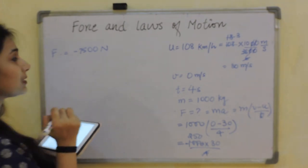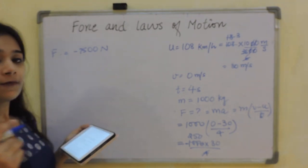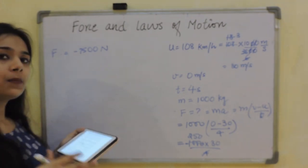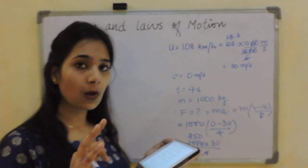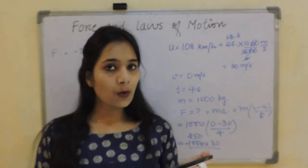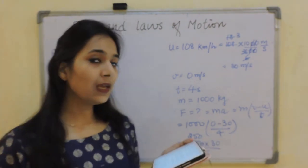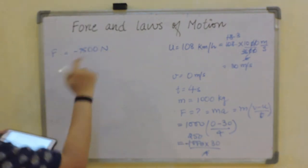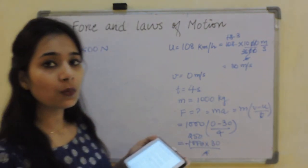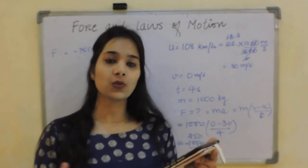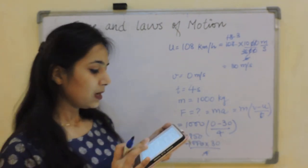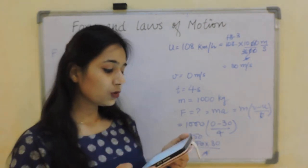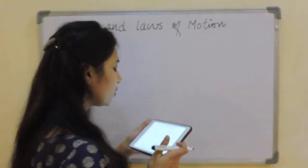The force exerted by the brakes is 7500 Newton. The minus sign is because according to Newton's third law, equal and opposite force acts — you apply force in one direction and the brakes apply the reaction force in reverse.